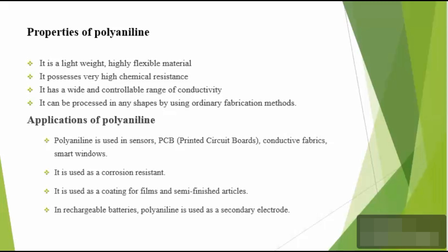The properties of polyaniline: it is a lightweight, highly flexible material. It possesses very high chemical resistance and has a wide, controllable range of conductivity. It can be processed into any shape using ordinary fabrication methods. Applications of polyaniline include sensors, PCB, conductive fabrics, smart windows, etc. It is used as a corrosion-resistant material, as a coating film, and in semi-finished articles. It is also used as a secondary electrode in rechargeable batteries.